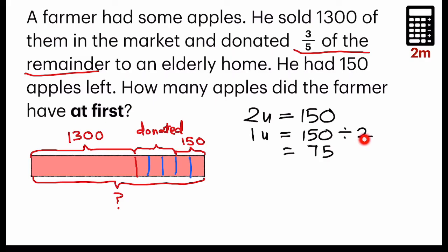Now if that's done, I'm able to find out this five units, which is the part that he has donated and the apples that he had left. So 5 units equals 75 times 5, which I will get 375.